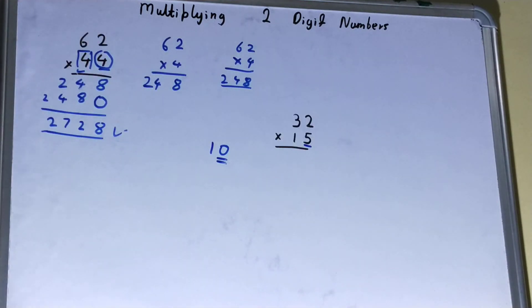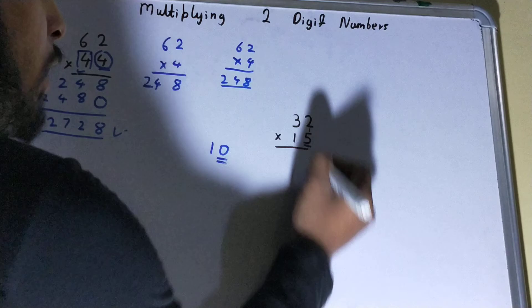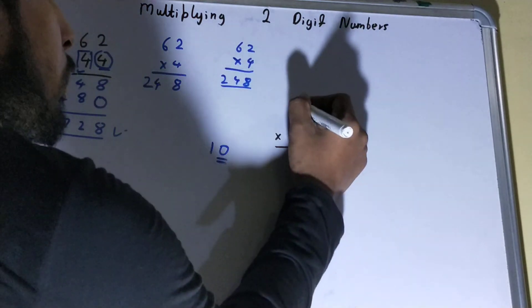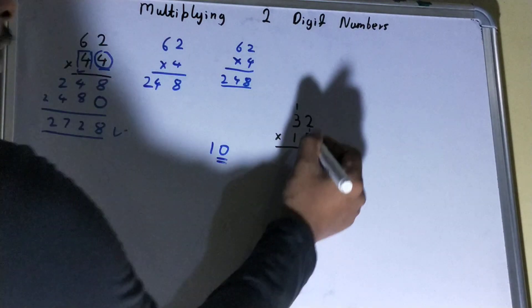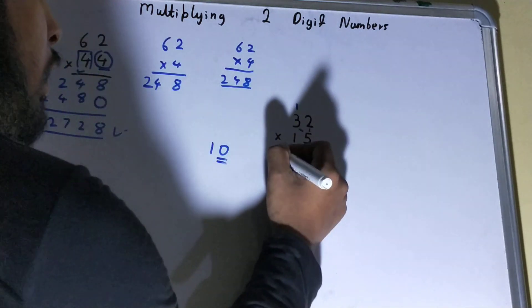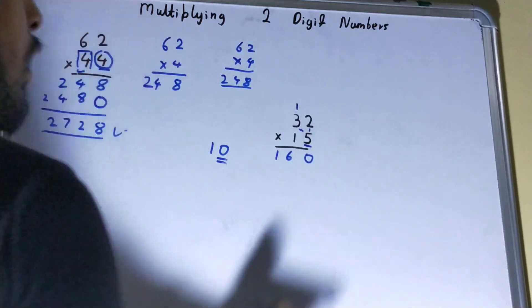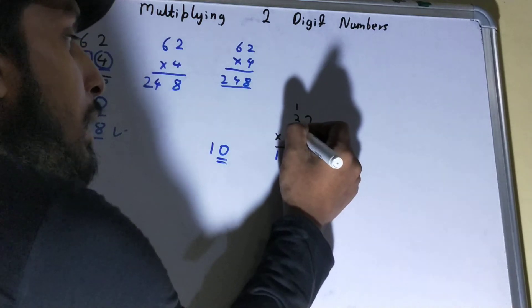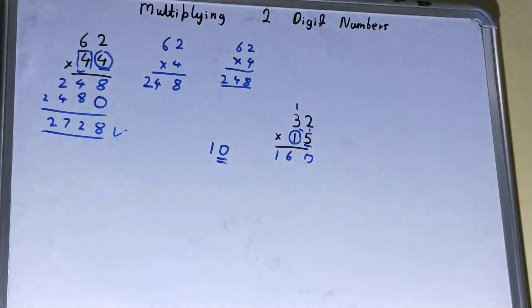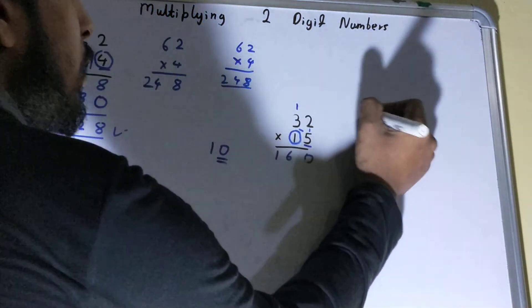First you start with the ones digit. Multiply it with this one: 5 times 2 is 10, so 0 and 1 will go as carry. Then you multiply with this one: 5 times 3 is 15, plus 1 carry is 16. Now we'll come to the tens digit, that is 1.